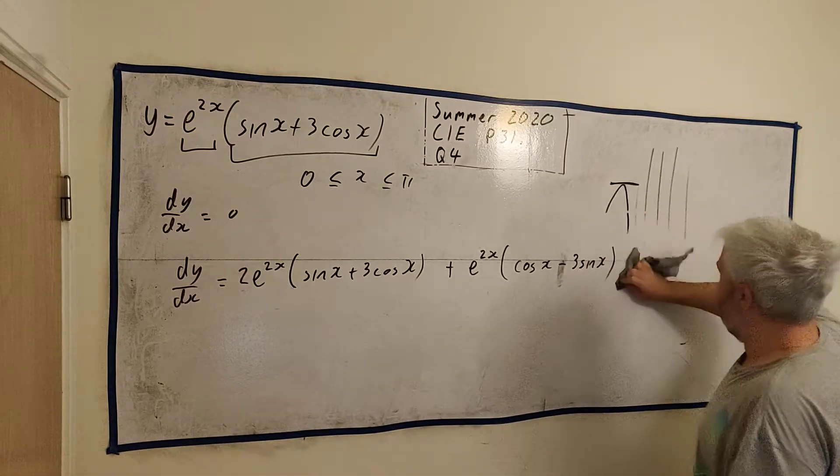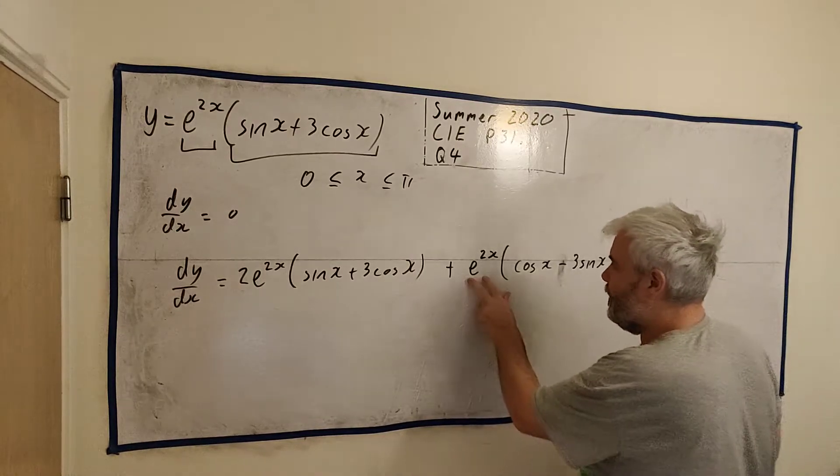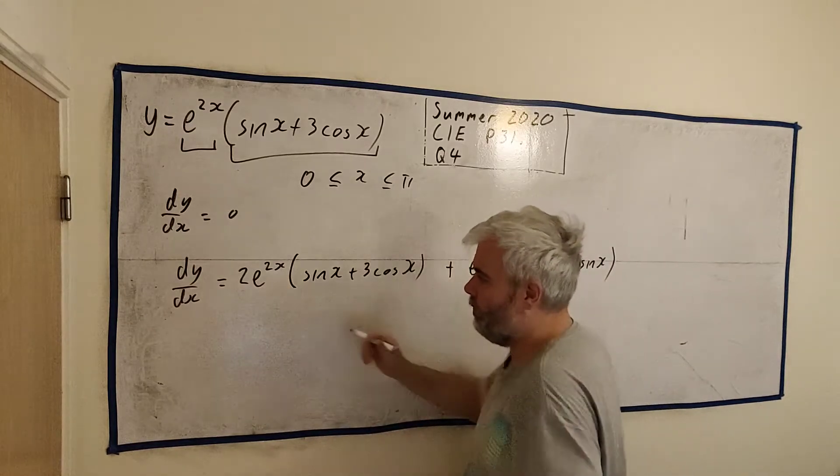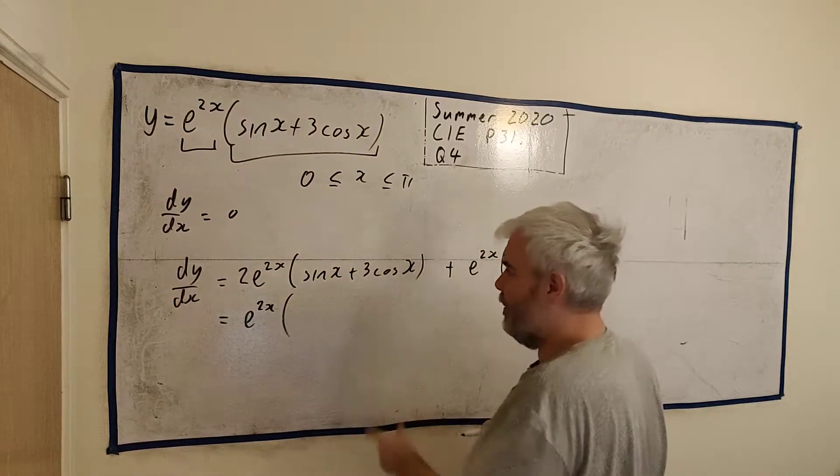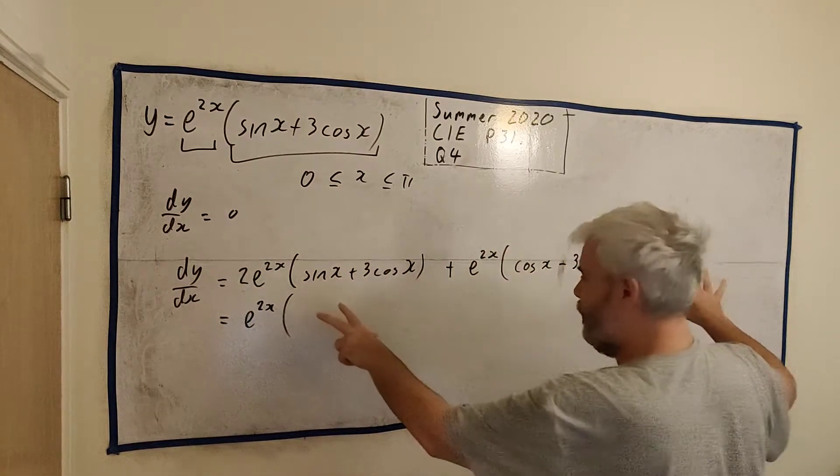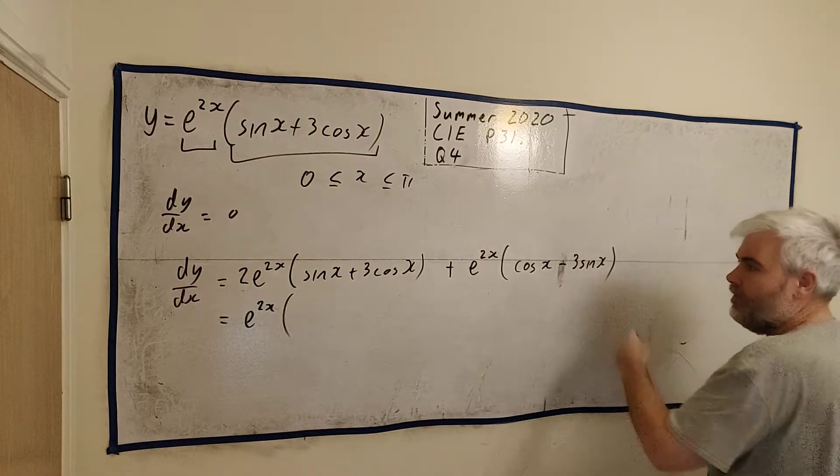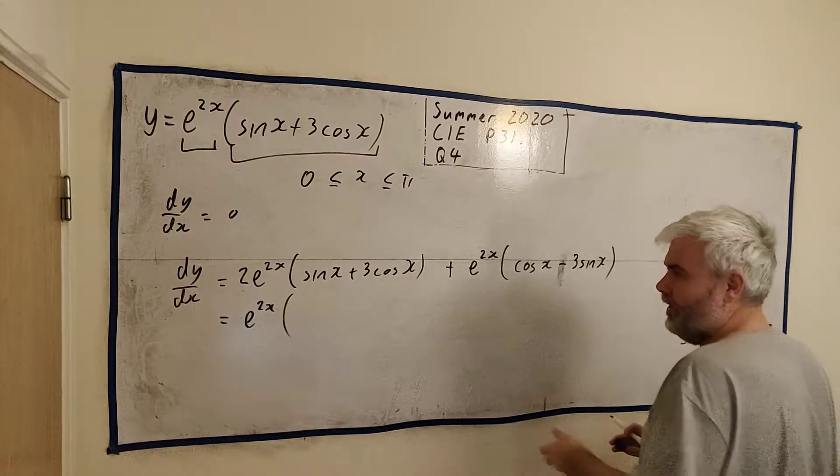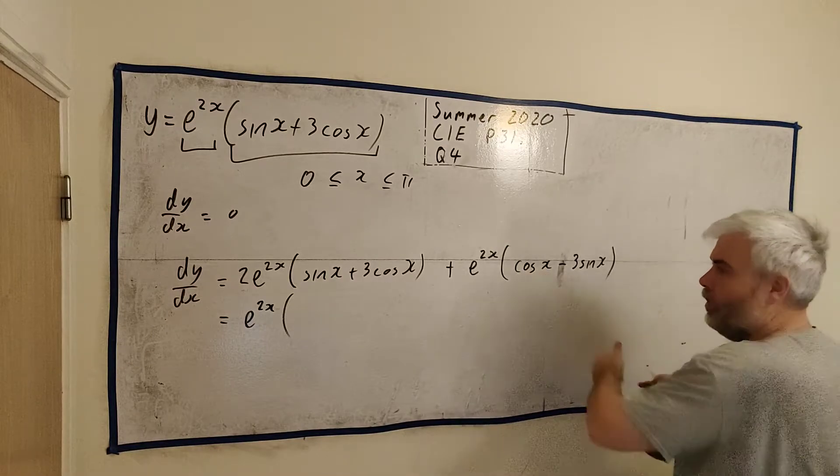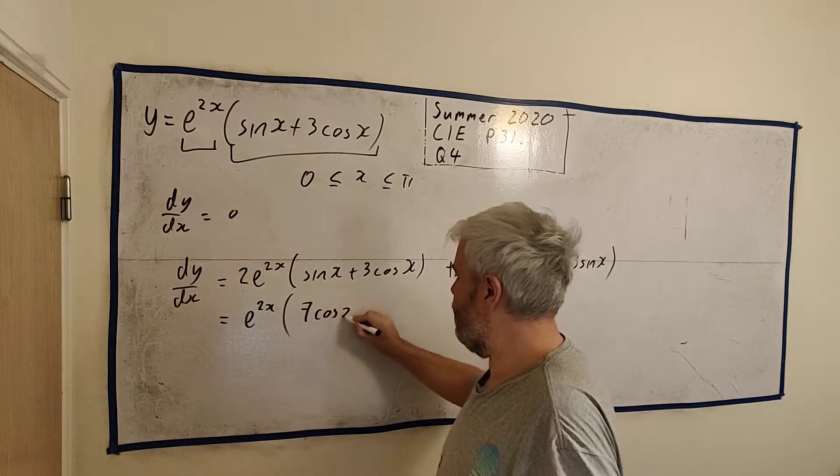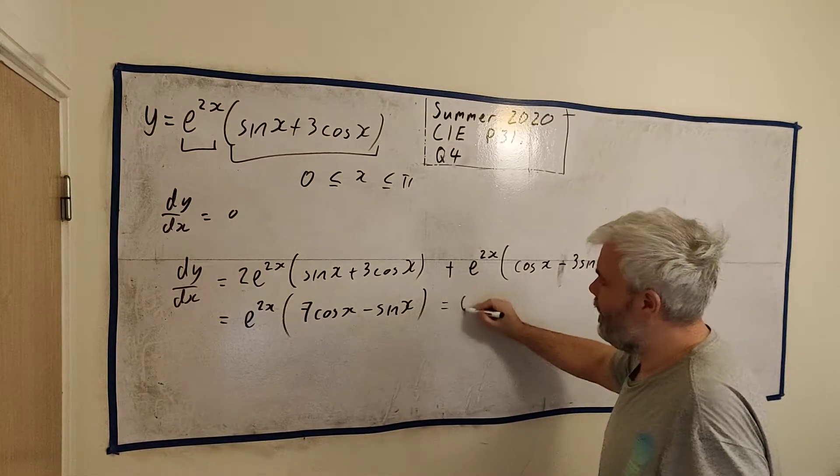Let me clean up some of this mess. Now, we can factor some of this. E to the 2x goes into both of them. So we can clean this up. E to the 2x. And 2 will multiply by this. Let's put them all together. We have 2 sine x's take away 3 sine x's. Let's do the cosine first in that case. 2, 6 cosine x plus another 1 cosine x. So we'll have 7 cosine x's and minus 1 sine x. And this is equal to 0.